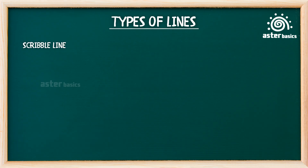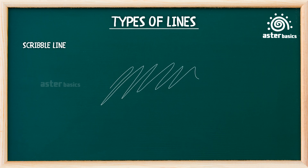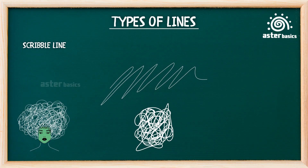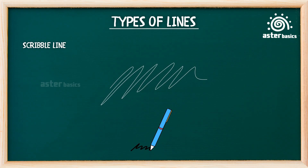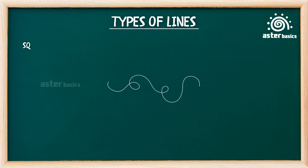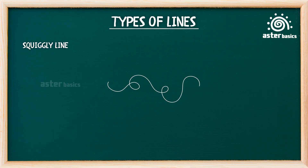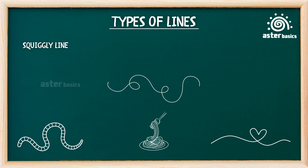Scribble line: a messy, fast, back-and-forth line with no clear shape. Scribble lines are used to draw messy hair, chaos, or emotions. Scribble lines are what you draw when you're super excited or in a rush — it's like your pencil had a mini dance party on the page. Squiggly line: curvy, uneven, twisty — like a lazy snake. Squiggly lines are used to draw worms, spaghetti, and silly decorations. They wiggle like worms or spaghetti noodles — silly, bendy, and just love to have fun.